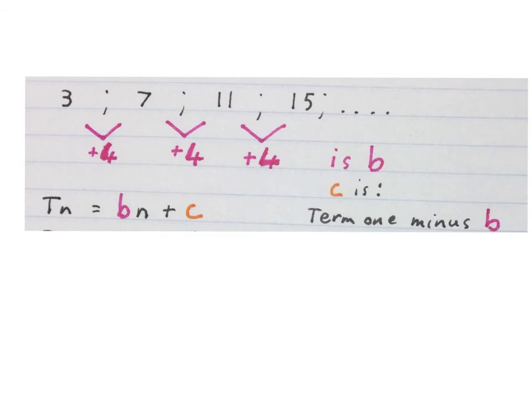I write down the formula Tn = bn + c. B is the constant difference and c is term 1 minus b.